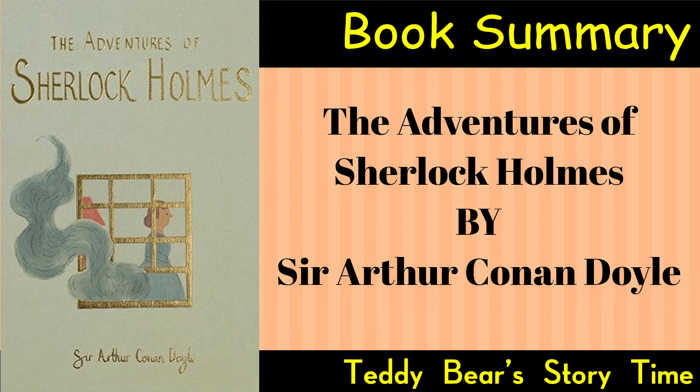Book Summary. A Scandal in Bohemia: Holmes is hired by the King of Bohemia to retrieve a compromising photograph from Irene Adler, a clever and resourceful woman who outwits him. The Adventure of the Red-Headed League: Holmes investigates a strange case involving a red-headed man recruited by a mysterious organization, only to discover it is a ruse to distract him from a bank robbery.